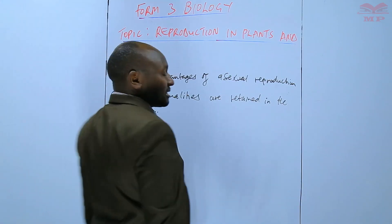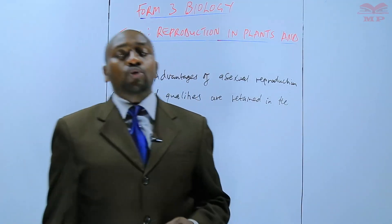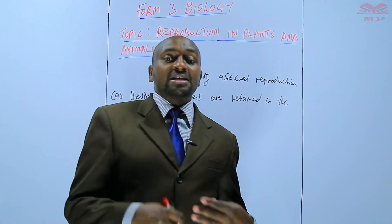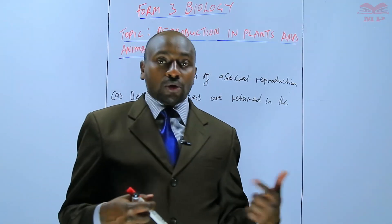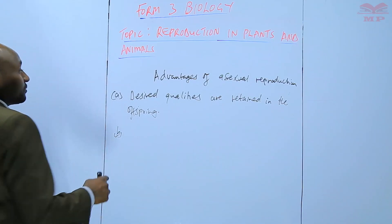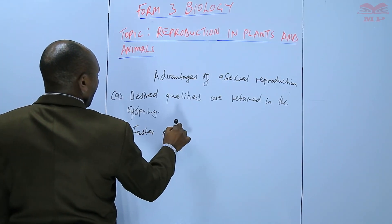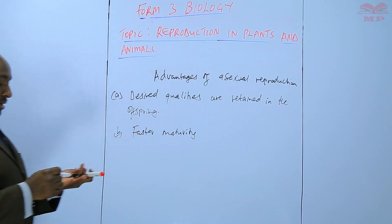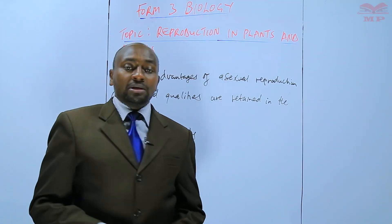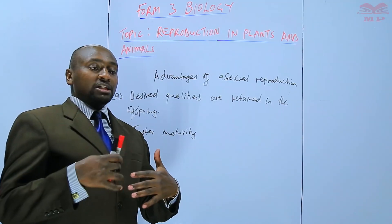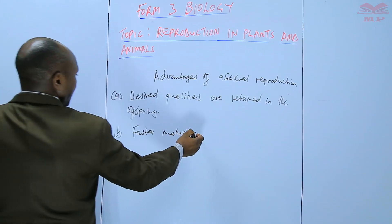What does that mean? If there is an organism that has superior or desired qualities, those qualities can be retained because the offspring are identical copies of the parents. Another advantage is that they have faster maturity — they mature faster because they don't have to go through a period of dormancy like in the case of seeds. We just produce individuals from the mature parent and they can continue their maturity.